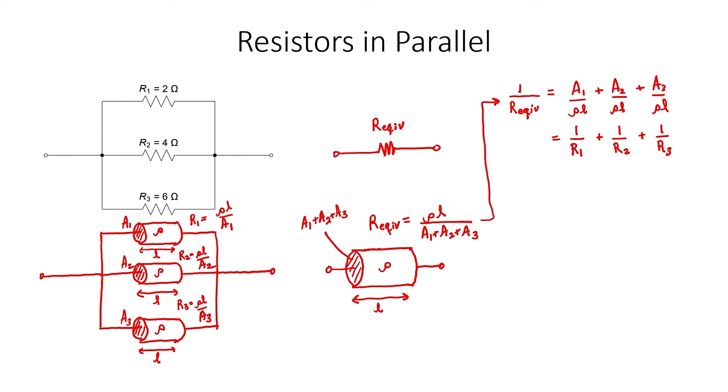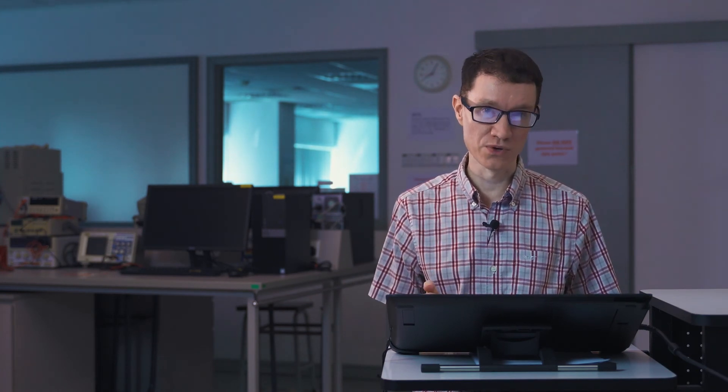What we can conclude from this is that in order to combine resistors in parallel, one needs to first take the reciprocal of each individual resistor, add them together, and then take the reciprocal of the result. That's the geometric argument.